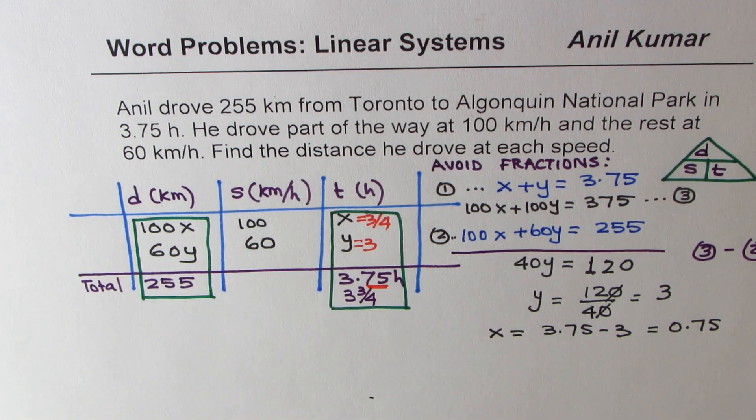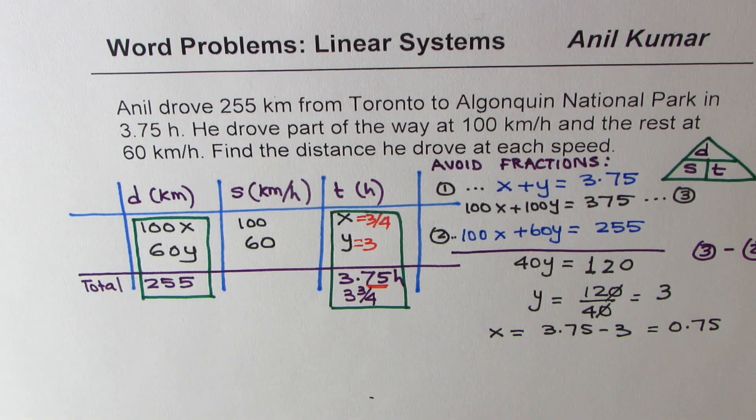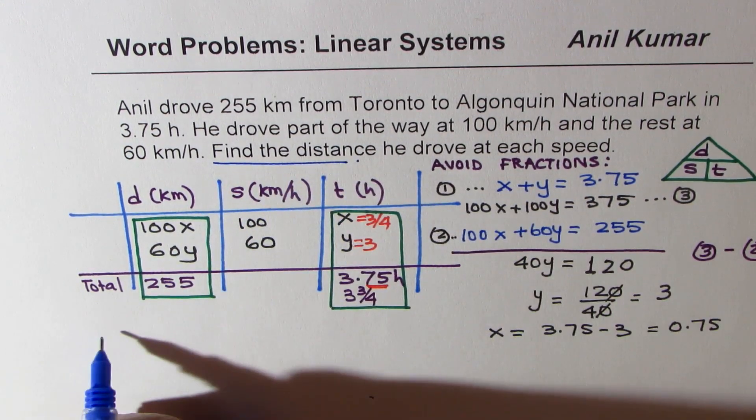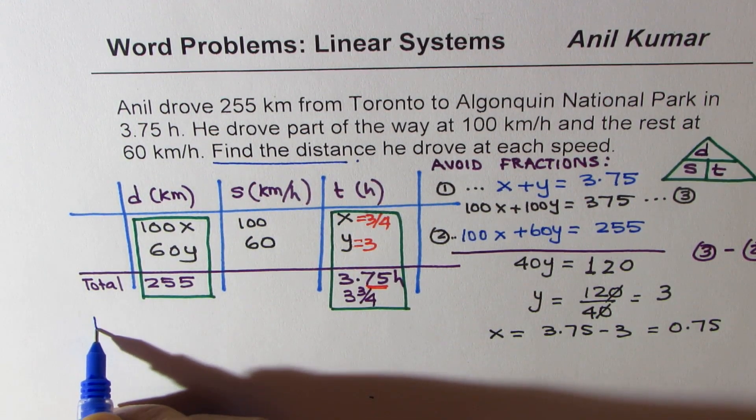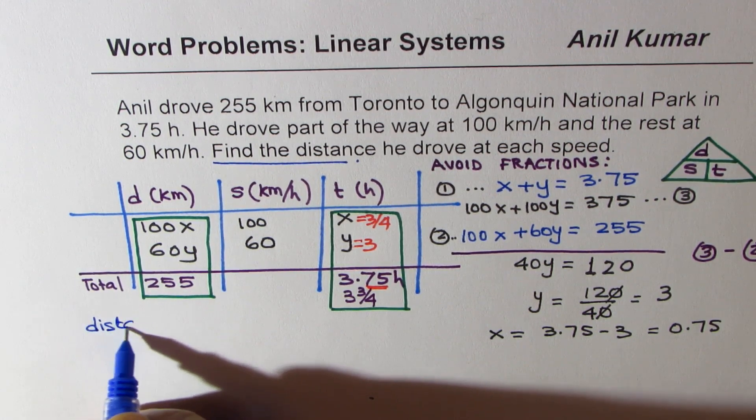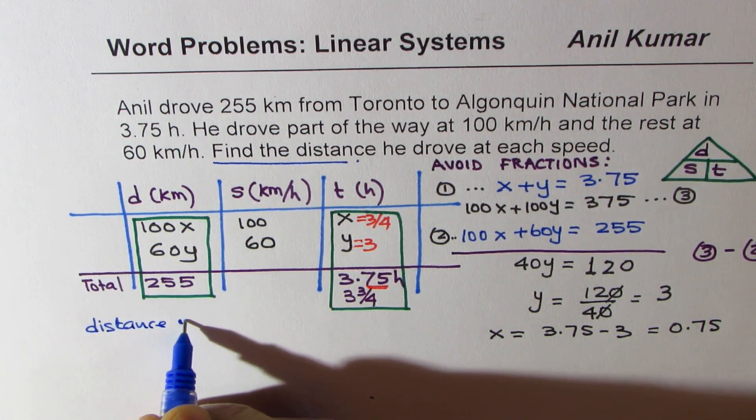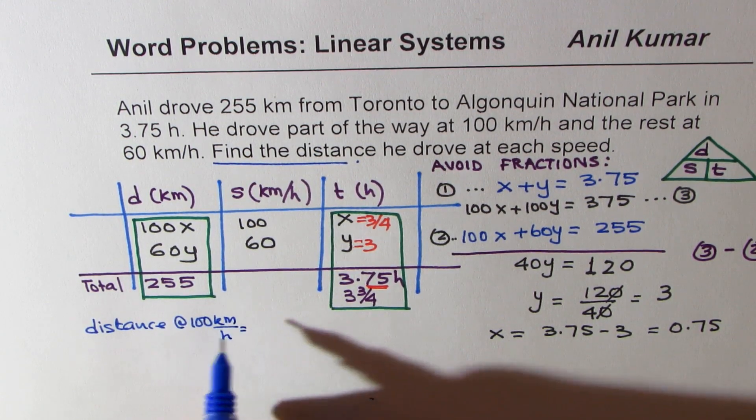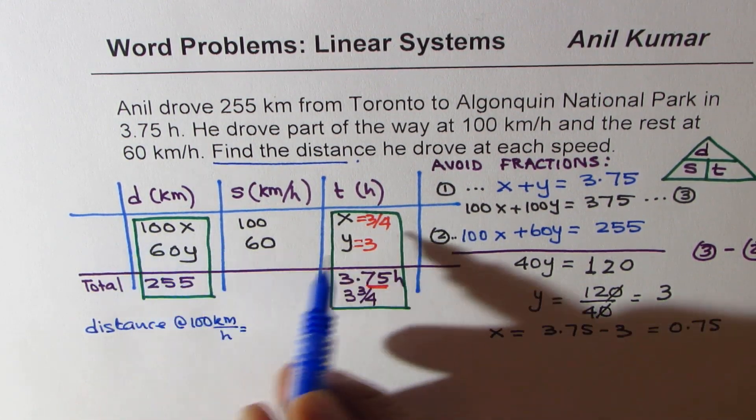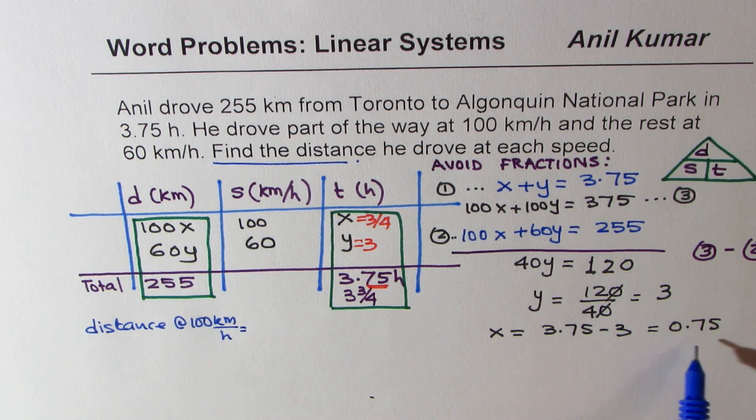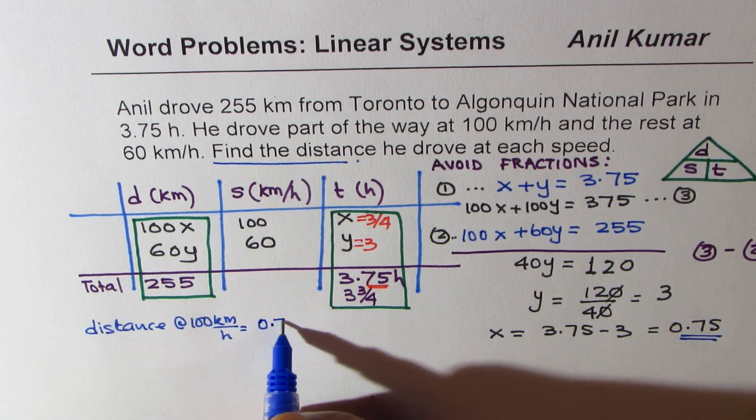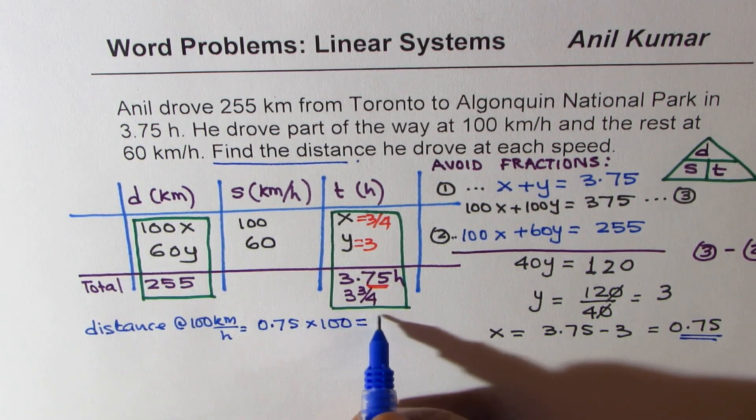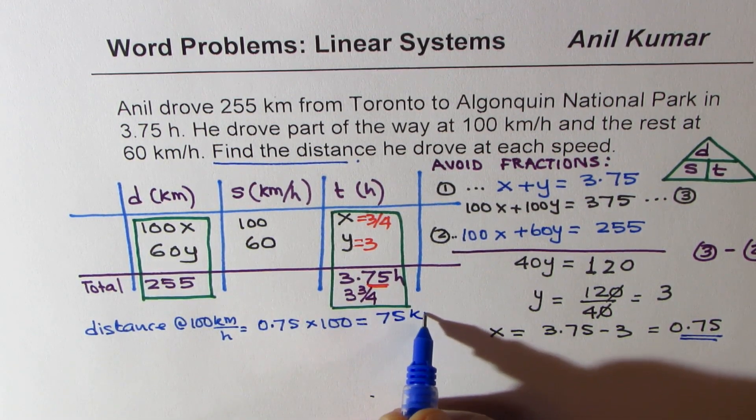We can now find the distances. Since we want to find the distances at each speed, distance at 100 kilometers per hour is how much? x times 100, which is 0.75 times 100, or 75 kilometers.